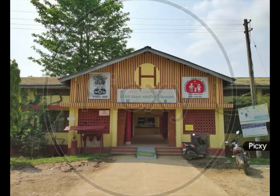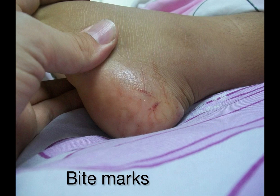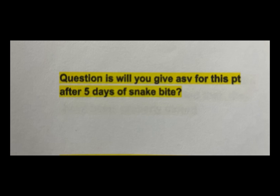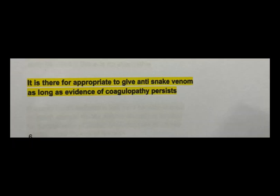Case 2: A non-alcoholic patient was found unresponsive in the morning with bleeding manifestations. He was misdiagnosed at a local hospital and later found to have bite marks. He was transferred to our hospital after 5 days. Will you give ASV after 5 days? Yes — antivenom treatment should be given as soon as indicated; it may reverse systemic envenomation even if it has persisted for several days, or hemotoxic abnormalities for one or more weeks.